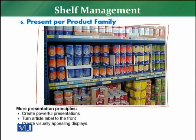The principles to follow: a per-product-family display has to be a powerful presentation. You need to turn the article label to the front — the face of the product should be in the front, and the back of the product should be at the back side of the display. You also need to create visually appealing displays, keeping into consideration the color factor and the size factor — from smallest to largest — as different color combinations will really help convince customers to buy more.